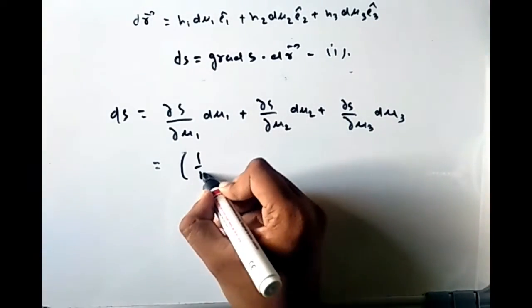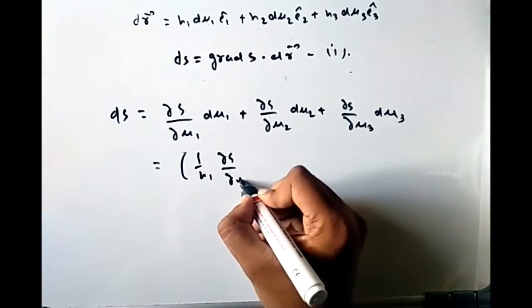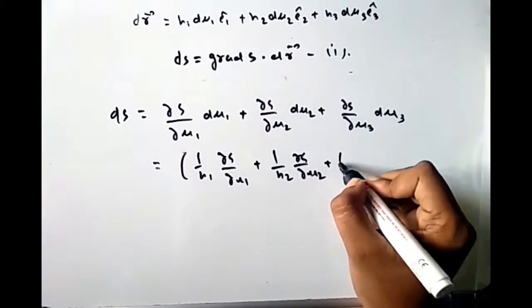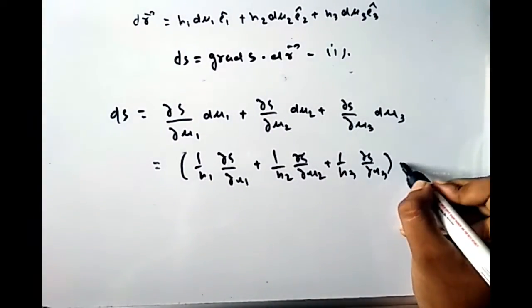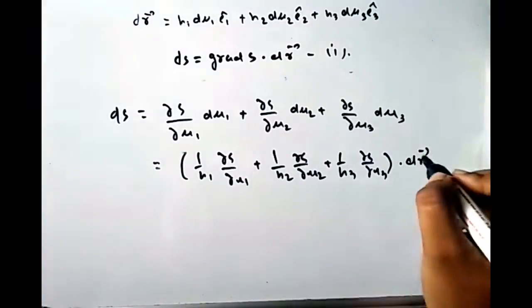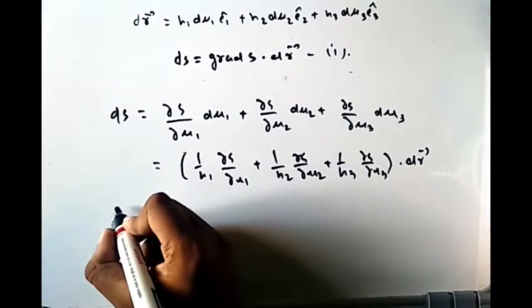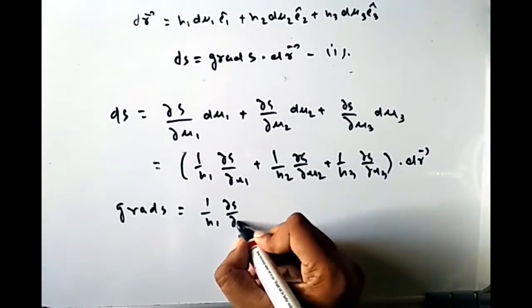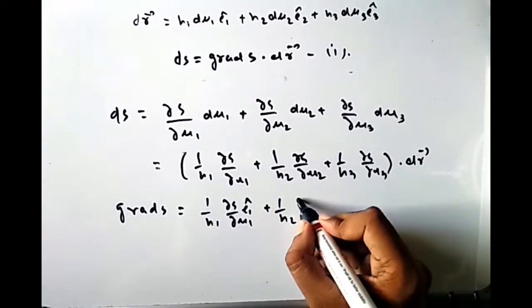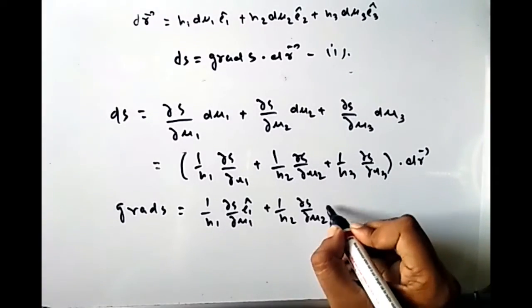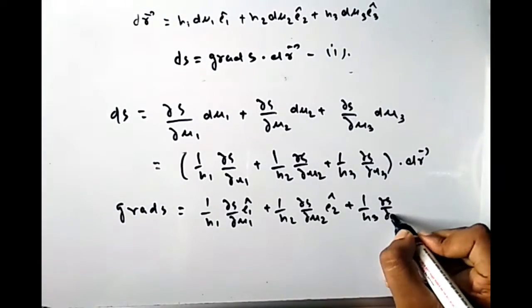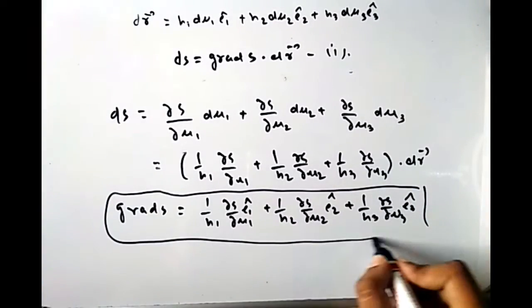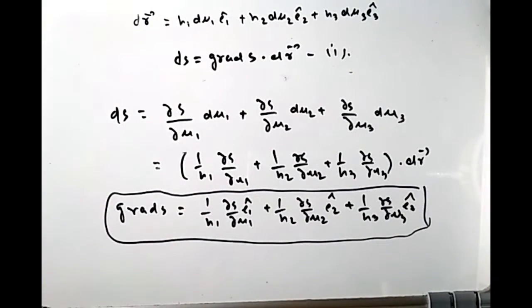Comparing the two expressions for ds, the gradient of s is: grad s = (1/h₁)(∂s/∂u₁) ê₁ + (1/h₂)(∂s/∂u₂) ê₂ + (1/h₃)(∂s/∂u₃) ê₃. This is the expression for the gradient in orthogonal curvilinear coordinates.